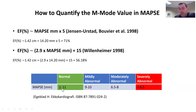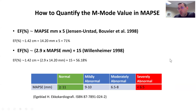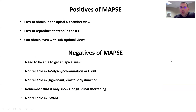Using the raw MAPSE value: 11 mm or greater is normal; between 9 and 10 mm is mildly abnormal; between 6.5 and 8 mm is moderately abnormal; and below 6.5 mm is severely abnormal. There are positives and negatives to anything, and MAPSE is no exception.